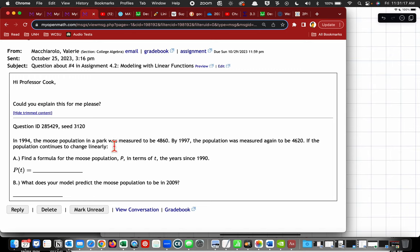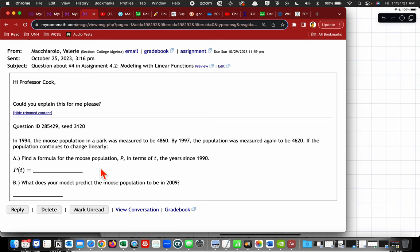So this problem here. In 1994, the moose population at Park was measured to be 4,860. By 1997, the population was measured again to be 4,620. If the population continues to change linearly, then we have to figure out what that's going to be.